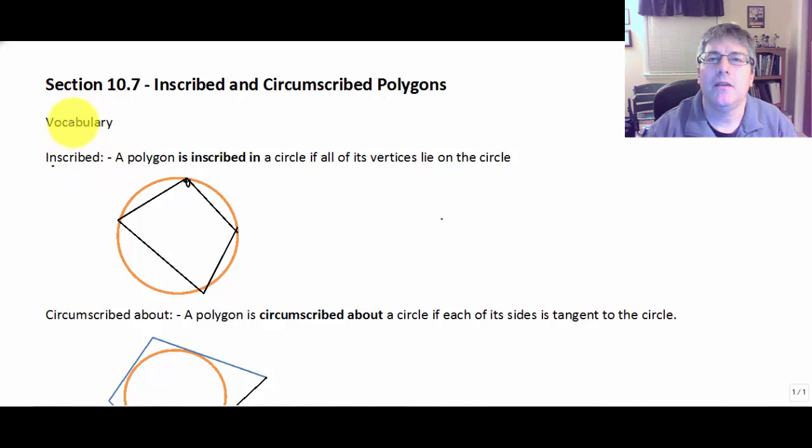Welcome back. In this video, we're going to study and learn some additional vocabulary about polygons as they relate to circles. We say that a polygon is inscribed in a circle if all its vertices lie on the circle.